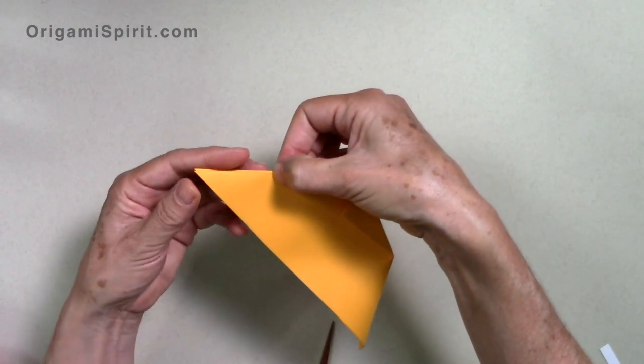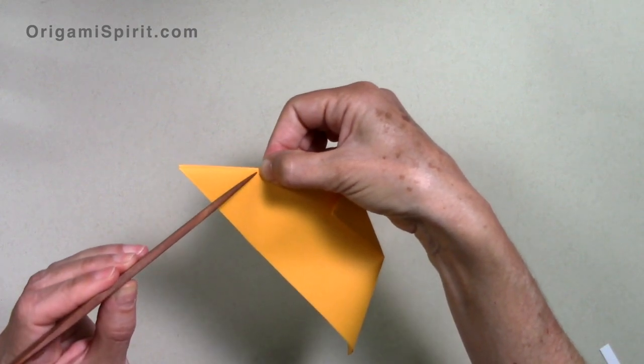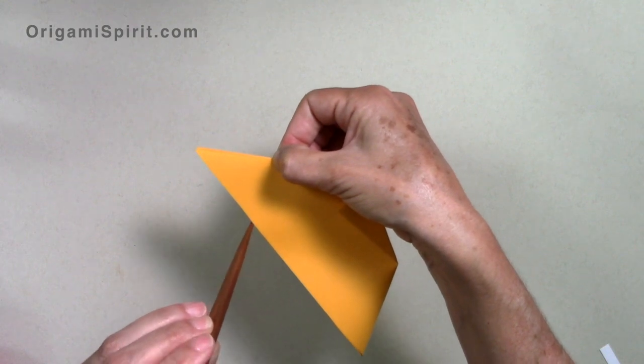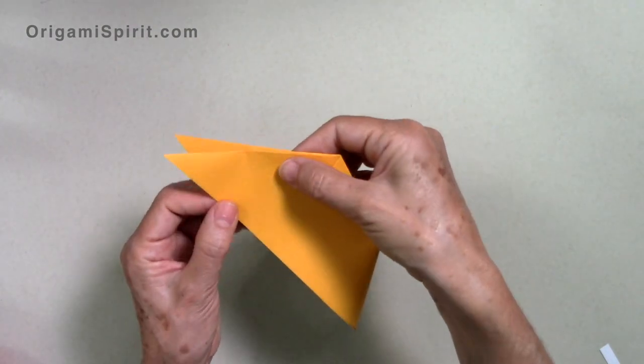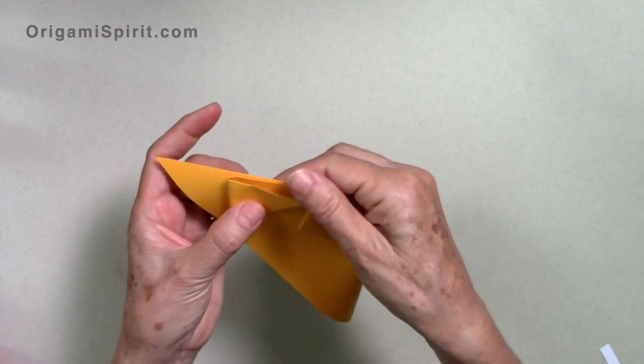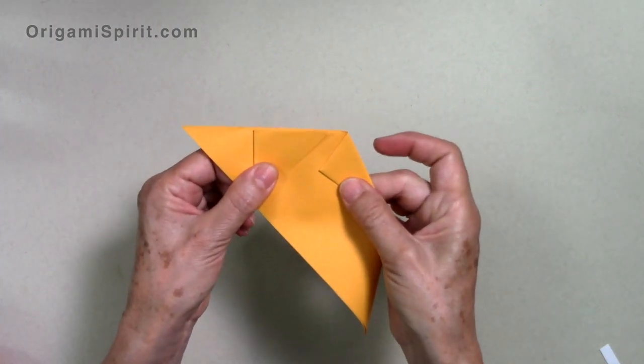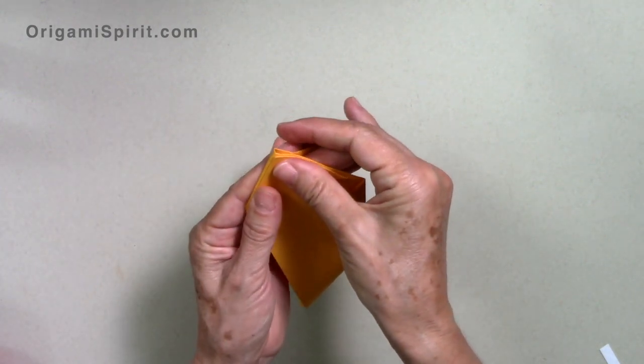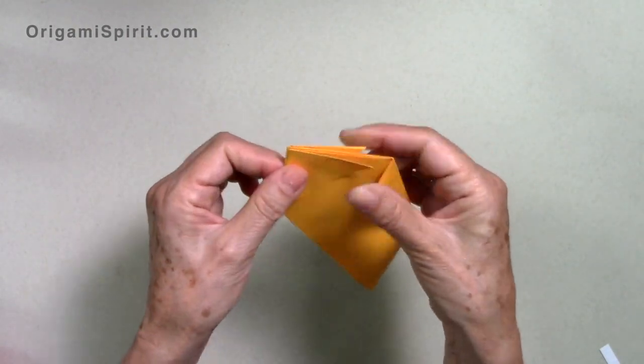We are going to make a fold coming from that folded edge, vertical, coming down to this raw edge. This section will match this folded section. And same on the back. We just trace and fold. Unfold.